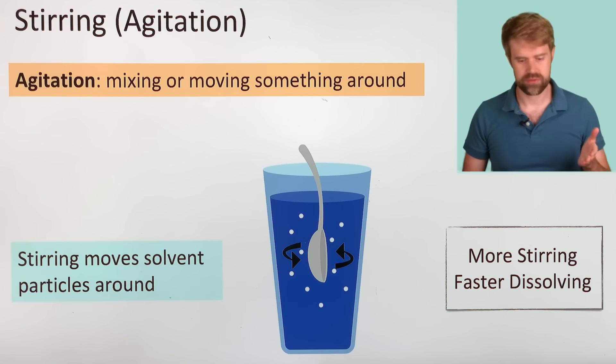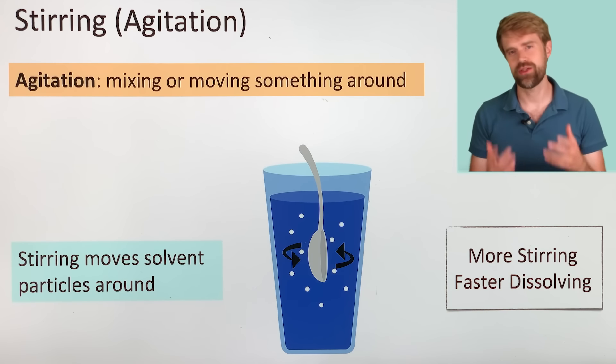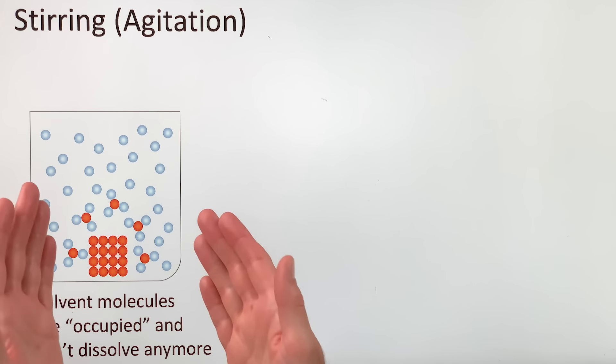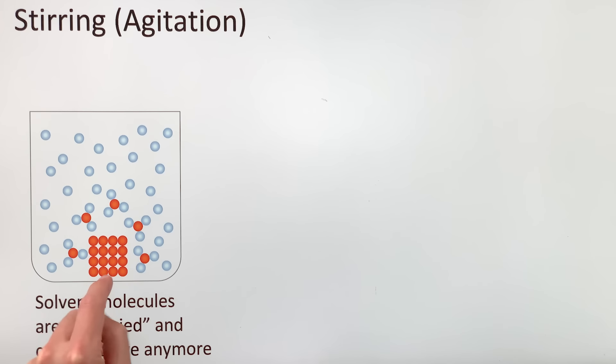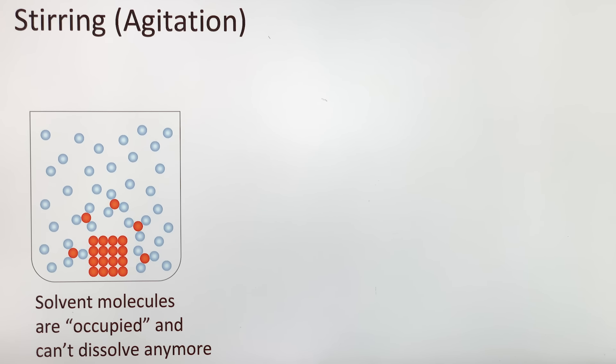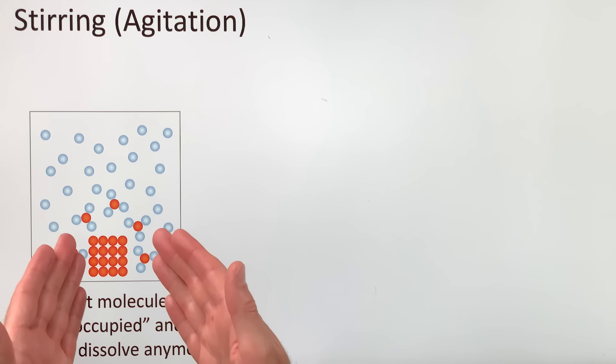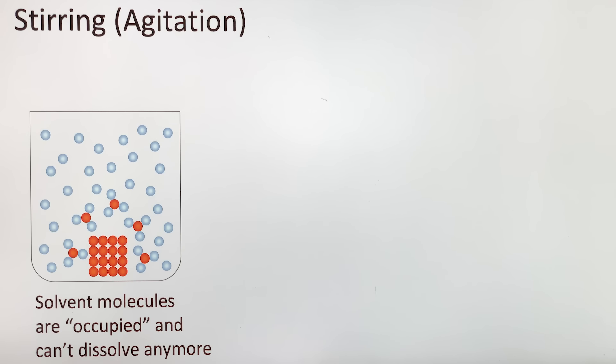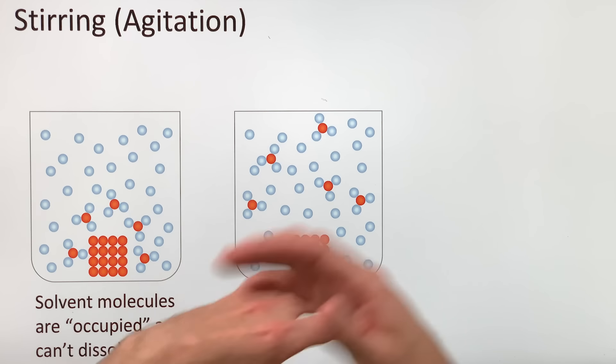Stirring moves the solvent particles around. Let's look at another diagram. Here we see some sugar getting dissolved in water. We'll use orange particles to represent the sugar here. When the solvent molecules surround or solvate the sugar particles, they can't dissolve anymore. They become sort of occupied. These dissolved sugar particles are surrounded by water, and those water molecules can't really pull away any more sugar. They're busy with the sugar particles they're already attached to.